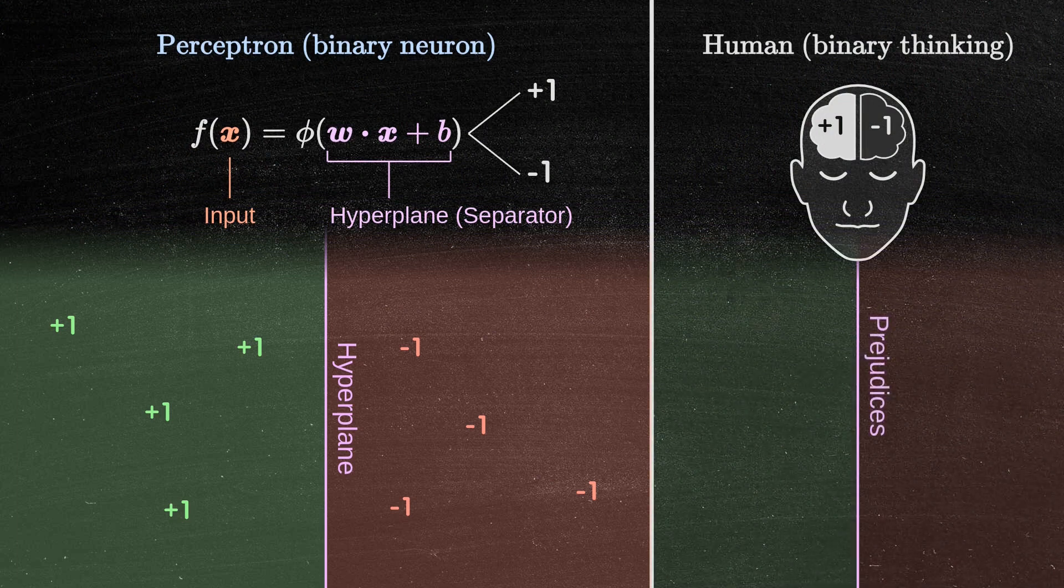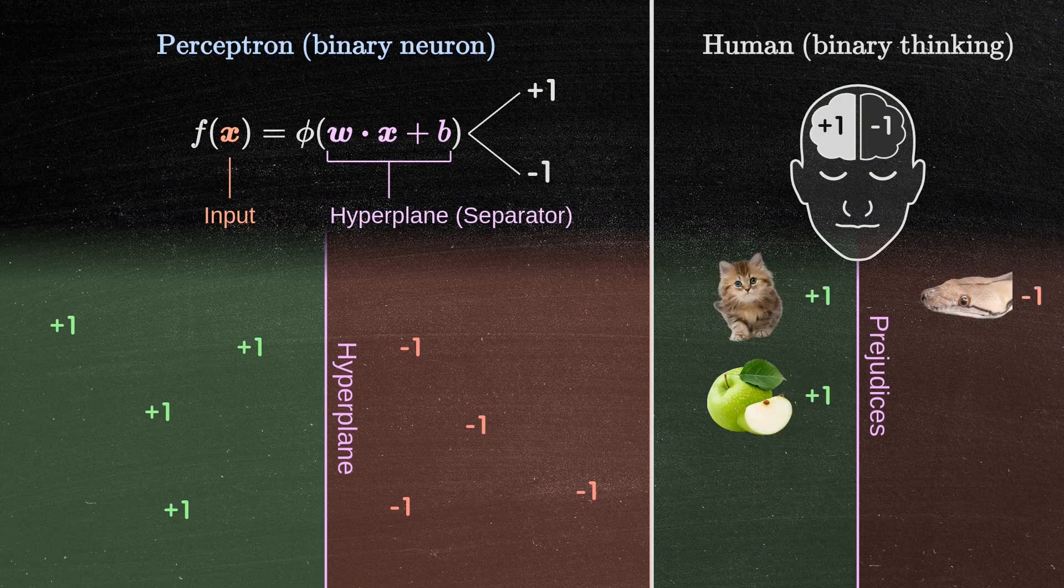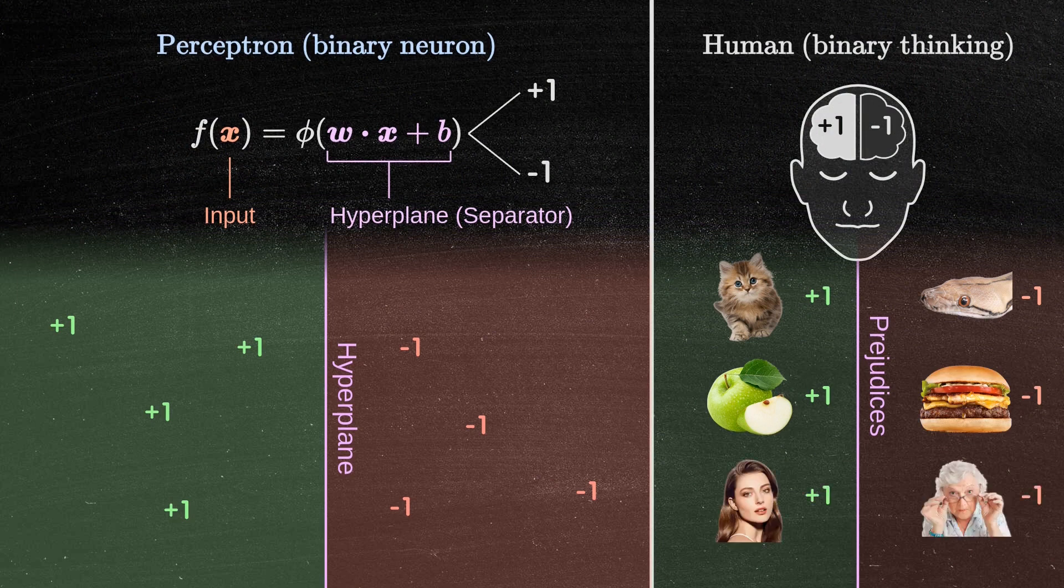Just like a person who forms a prejudice based not on actual experience, but on what others tell them, for example, through social media, the perceptron algorithm also needs us to provide labeled samples that define what belongs to one category and what belongs to another.